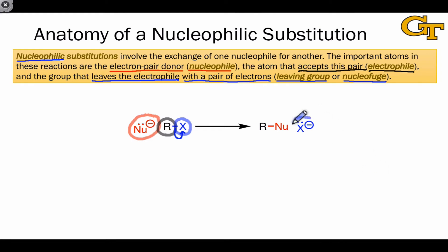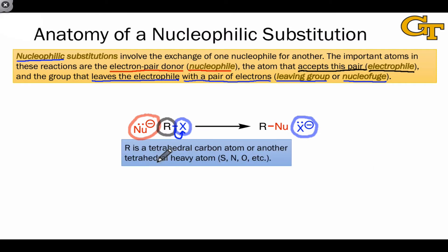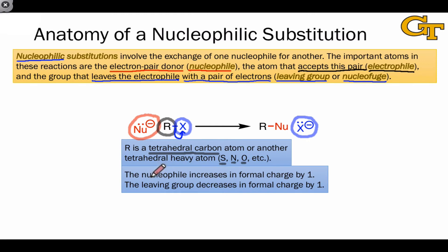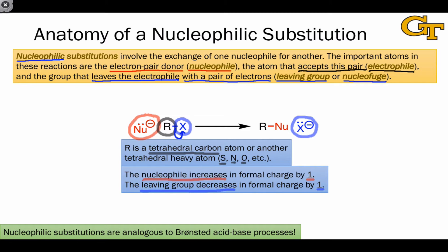You'll sometimes hear X⁻ referred to as the leaving group as well, and this is really just a semantic difference. Keep in mind that R — the atom bound to the leaving group in the electrophile — is always tetrahedral. It's often carbon, but it doesn't have to be; it can be sulfur, nitrogen, oxygen, or in theory any other heavy atom. Because of the way electron flow works in this process, with the nucleophile donating a lone pair, the nucleophile increases in formal charge by one unit. The leaving group decreases in charge by one unit, since it takes on an additional non-bonding lone pair of electrons where it previously had a bond. Nucleophilic substitution reactions are analogous to Brønsted acid-base processes.